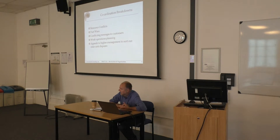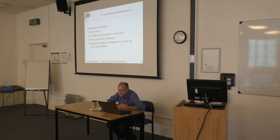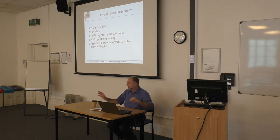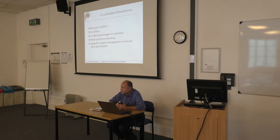Where coordination breaks down, you get a typical set of symptoms: conflicts over resource, turf wars, conflicting messages to customers — because department A says 'you can have it next week' and department B says 'we're not starting our bit till next month.' And weak operations planning. All the lean stuff about smoothing flow lives in this bit. When it breaks down, you get appeals to higher levels of management to come and sort out inter-unit spats. We have about 20 recurring pathologies we see again and again, and this is one of the really, really common ones.